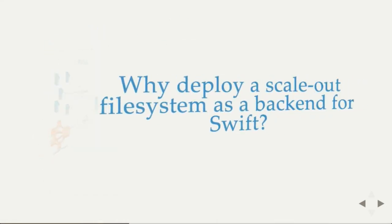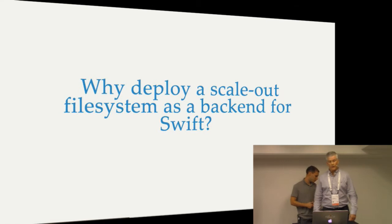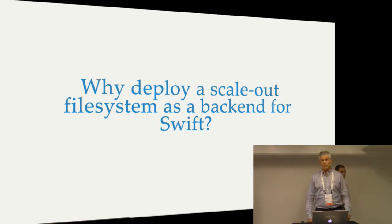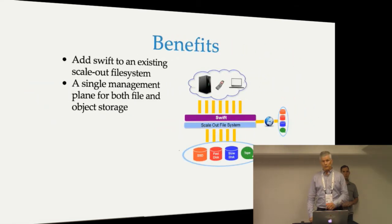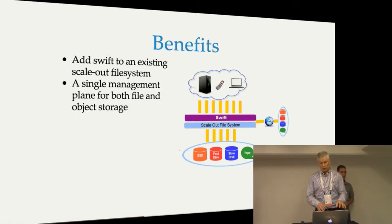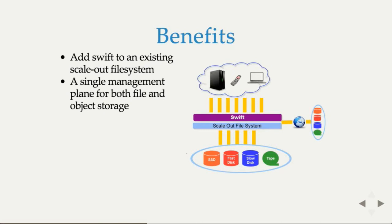Bill is going to talk about how to deploy on a scale-out file system. The question is, why would you want to deploy Swift on a scale-out file system using it for the back-end? There are a number of benefits. First, if you already have an existing scale-out file system, you can throw Swift on top of that and begin using it immediately. Especially with the new storage policies, you can point one of your Swift storage policies to the scale-out file system and make use of that storage.